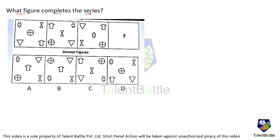What figure completes the series? If you carefully observe, this figure transforms into this one, this transforms into this, and this is going to transform into the answer. Observe the middle part: the middle symbol goes to the left-hand side bottom corner. The circle with a cross goes to the bottom right. Now the middle is an hourglass shape — two inverted triangles — and that goes to the bottom left corner in the next figure. So now there is a smiley face, and in the answer figure the smiley face comes to the left-hand side corner. Answer is option B.